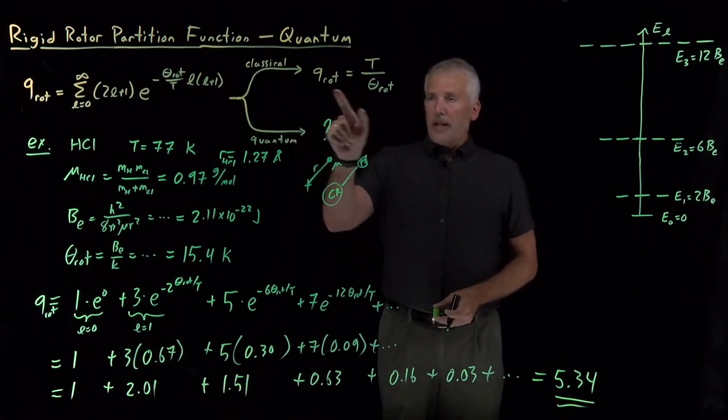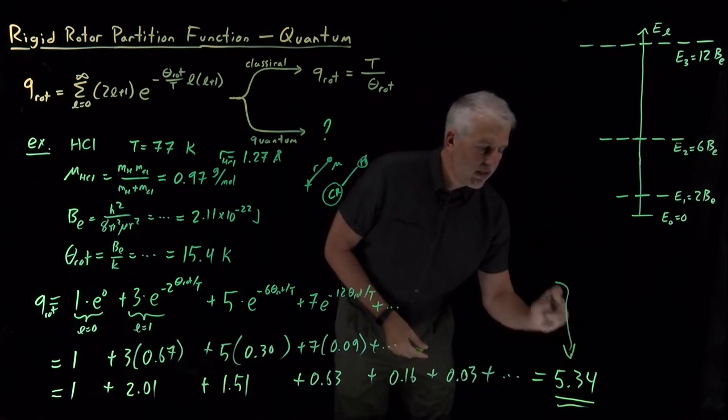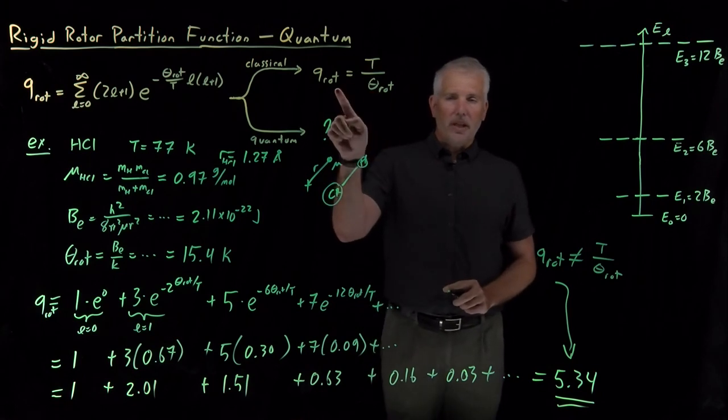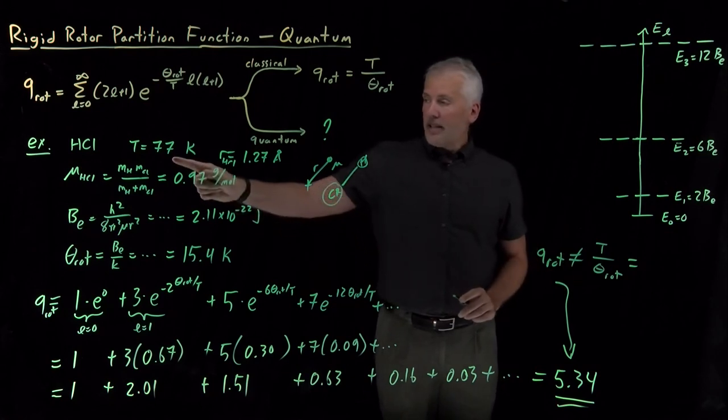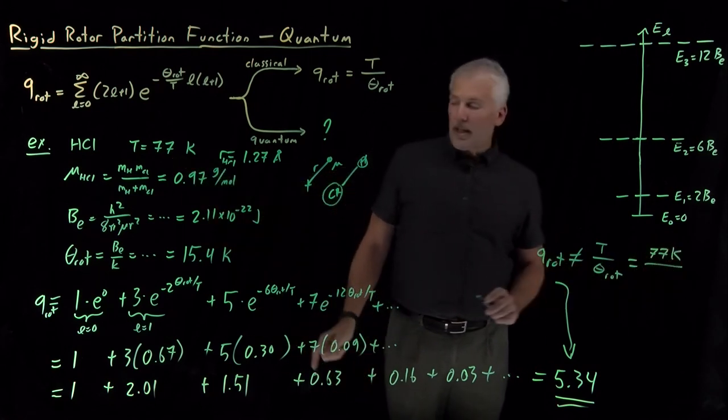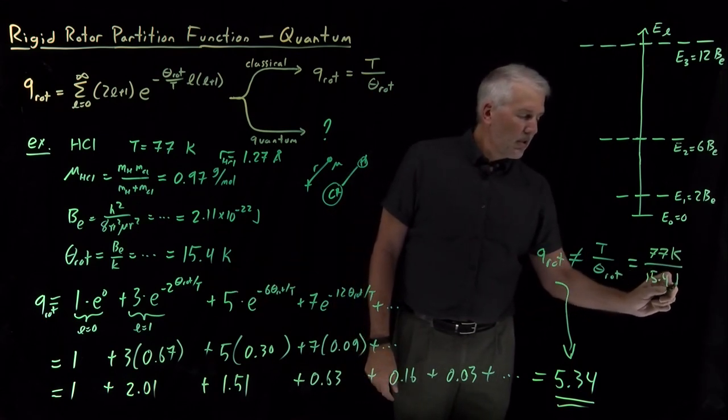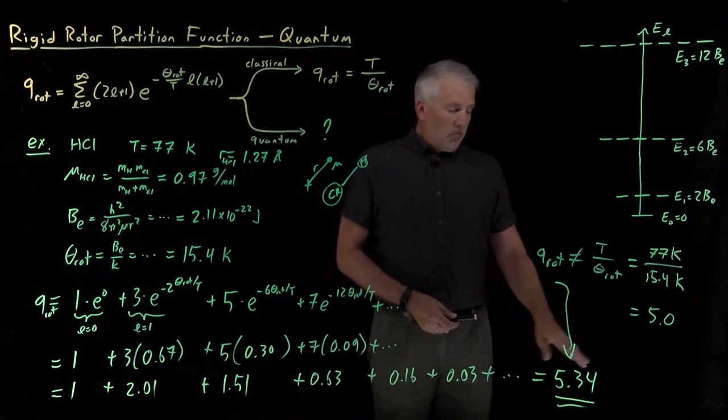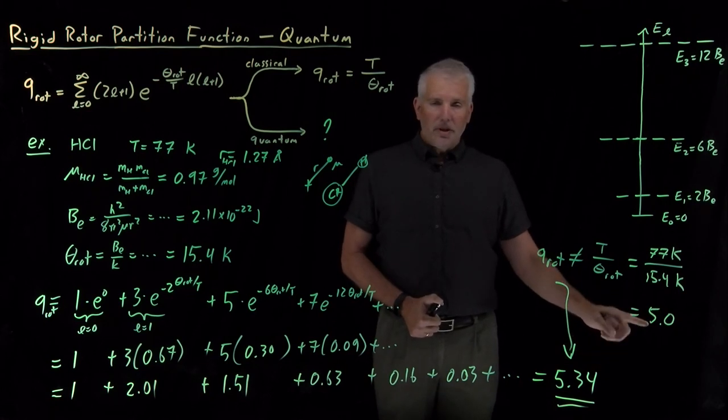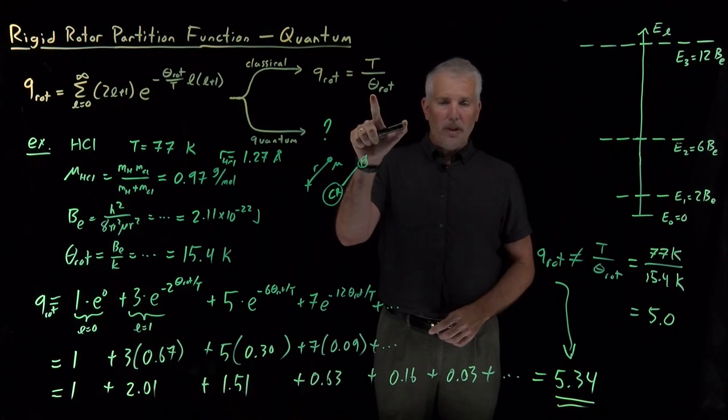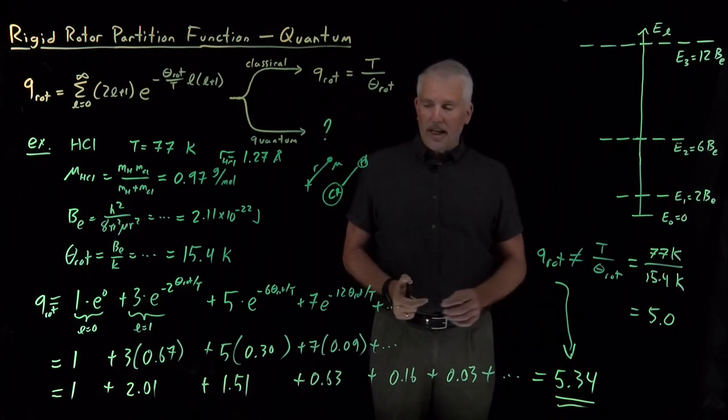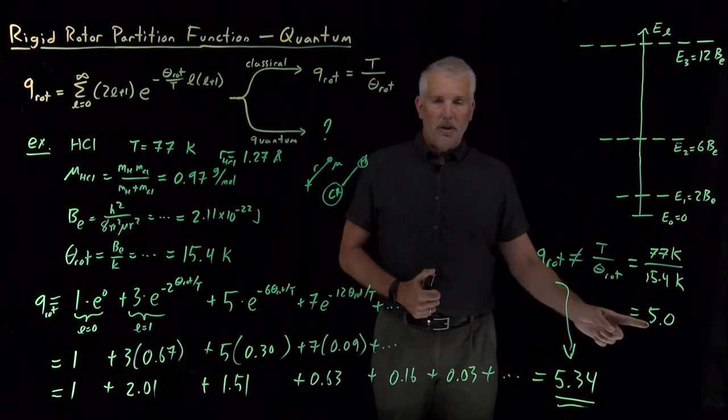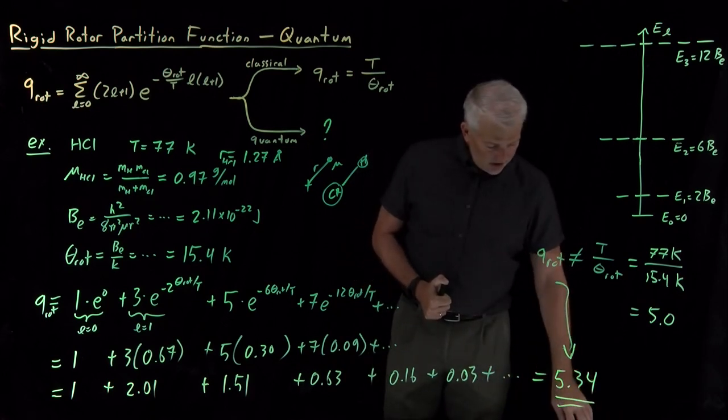It also confirms our expectation that we couldn't have used this more simple formula. In fact, if we had, so we'd expect that the rotational temperature is not exactly T over theta rotational, not what we would have gotten if we used the classical approximation. Just to double-check and see if that's true, if we had said 77 Kelvin divided by 15.4 for the rotational temperature, so that works out to be not 5.34. It actually works out to be 5.0. So that's actually not too far off. We'd have only made less than a 10% error in the partition function if we had been a little bit lazy and used this classical approximation, even though we know we didn't deserve to be able to use this. But we're quantum mechanical enough under these conditions that the correct answer, the full sum of all these Boltzmann factors, turns out to be something a little bit different than what the classical approximation predicts.